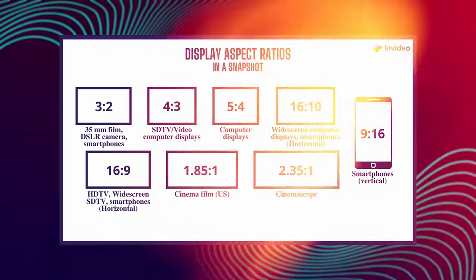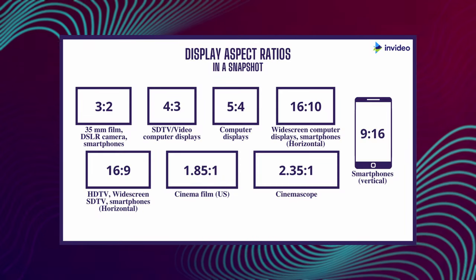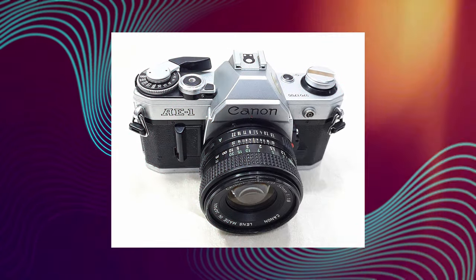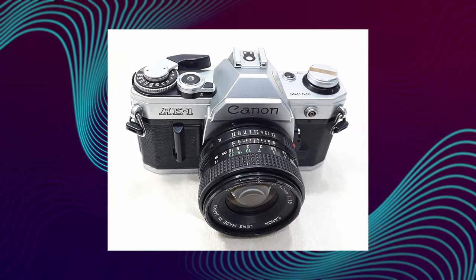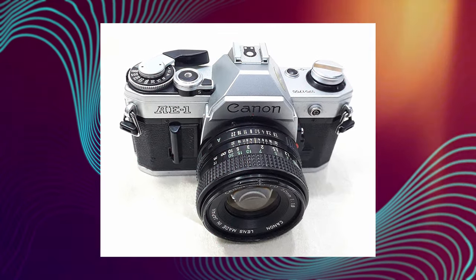The first one is the aspect ratio list. This is 35mm film and aspect ratio. But the DSLR camera is also a mobile phone camera.